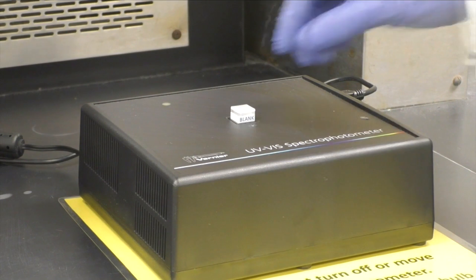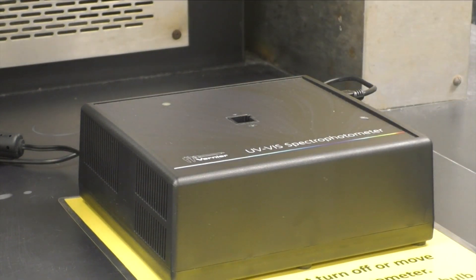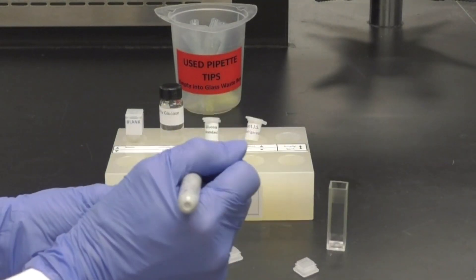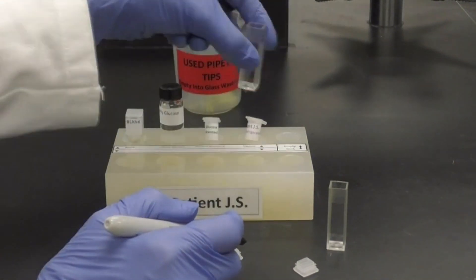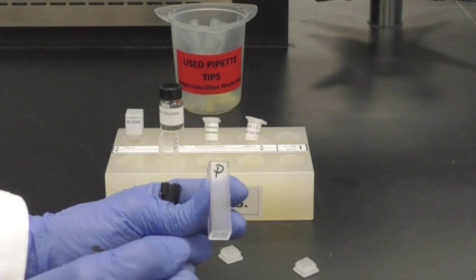Remember to place the blank back in the patient block. Start by labeling the two cuvettes. Here we are using S to indicate the standard and P for patient.